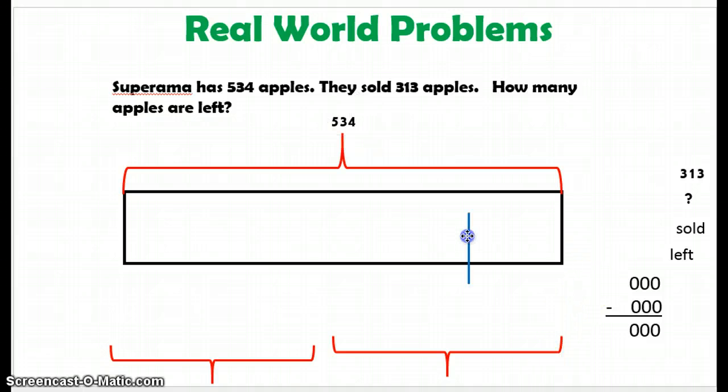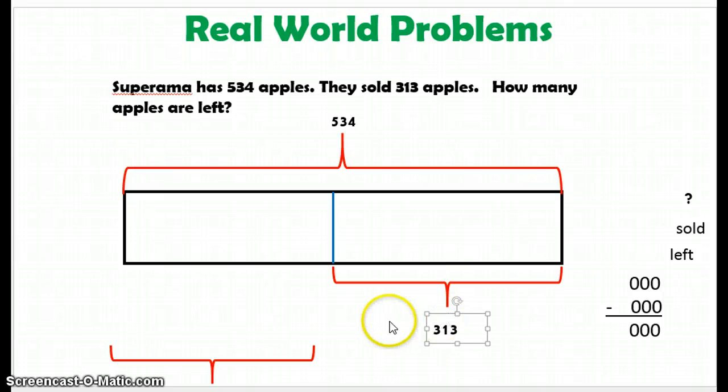They sold a part of it, a part of those apples. They sold 313 apples, okay? So now we have our bar model into two parts. What I sold, and I'll label that.